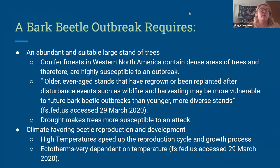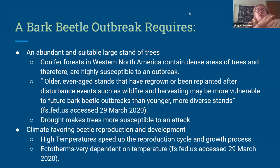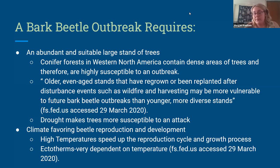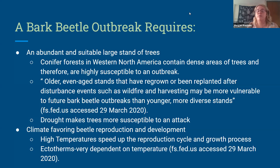So what does a bark beetle outbreak require? First, it needs an abundant and suitable large stand of trees, found in conifer forests in Western North America, where there are large, dense areas of trees that are highly susceptible to attacks. Trees that are older, aged, or have been through a disturbance event such as wildfire, harvesting, or flood are more susceptible because their defenses are down compared to younger, more diverse stands. Drought is also very common in this area, making drought-stressed trees more susceptible as well. The second requirement is a climate that favors beetle reproduction and development — high temperatures. These beetles are ectotherms, meaning their body temperature is dependent on the environment, so their life cycle and growth processes are very dependent on ambient temperature. In high-temperature climates, their reproduction and development will be faster.